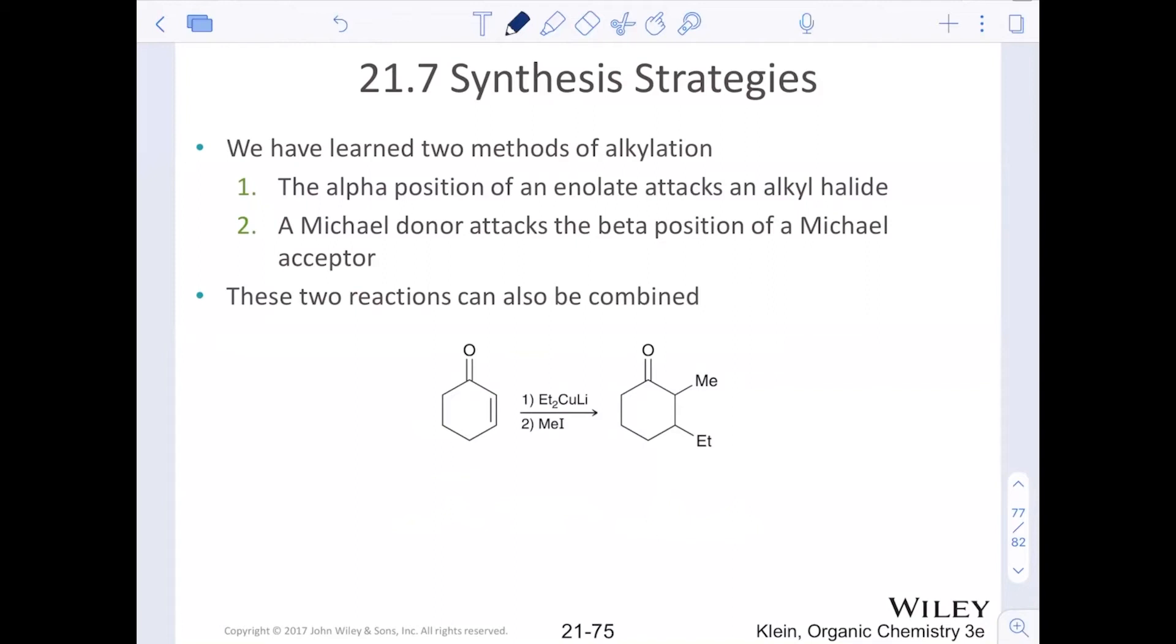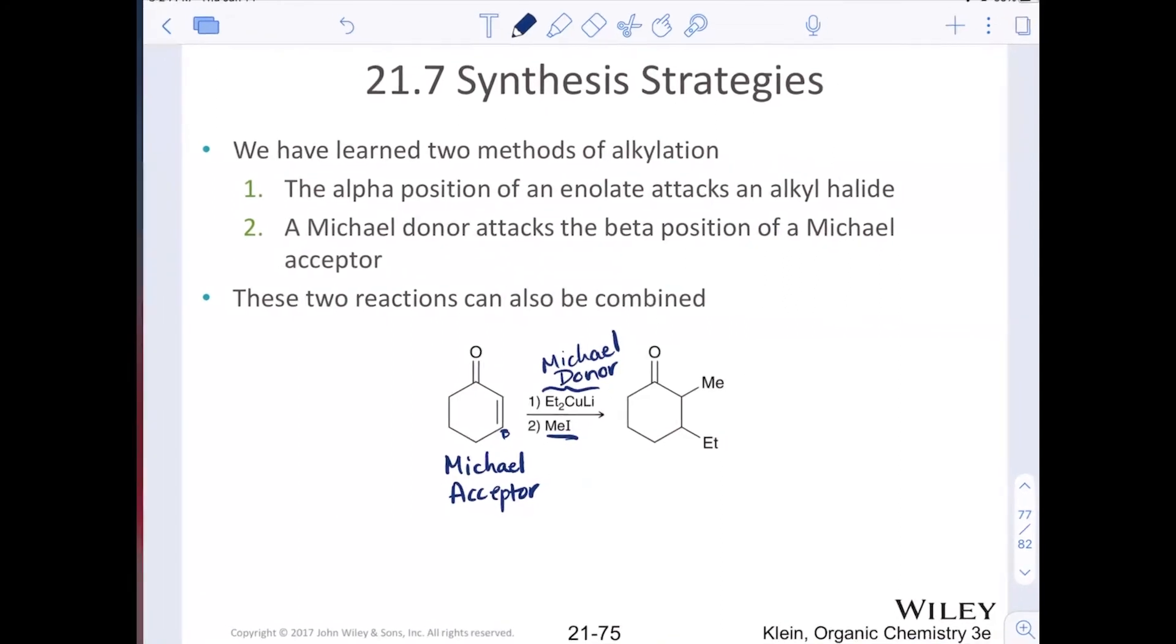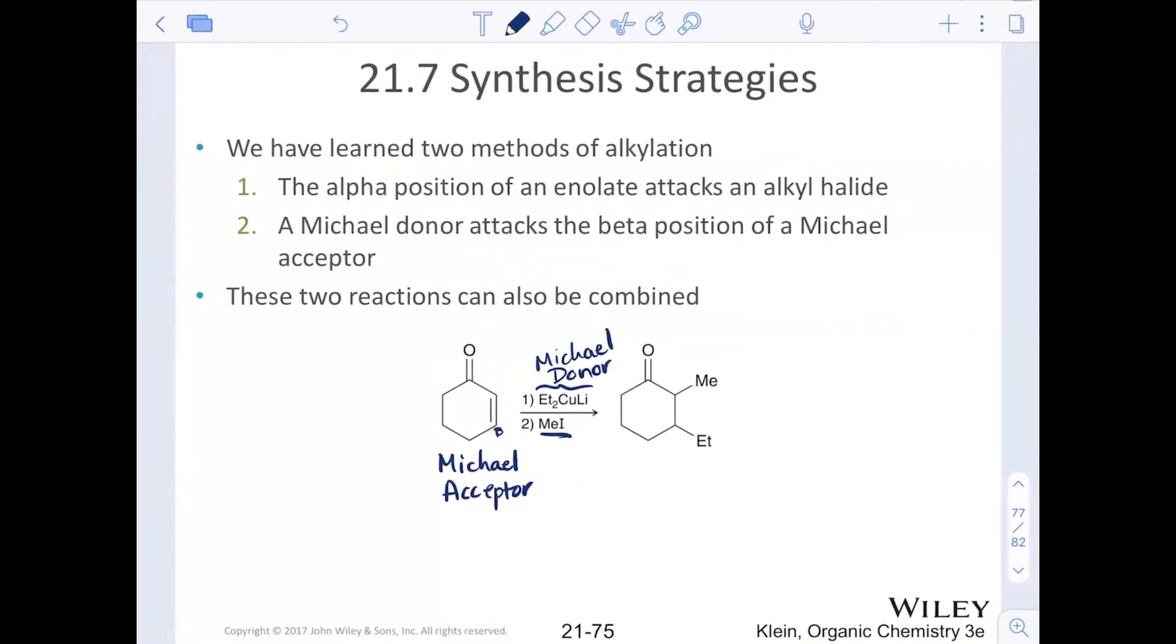So you could think of this as our Michael acceptor because it has that beta position. Any Michael donor can be over the reaction arrow here. The alpha position can also be utilized. This is a new synthetic strategy that's brought up in this section.